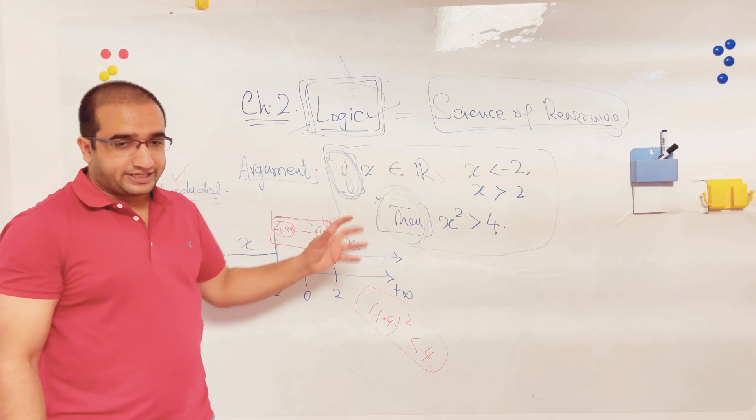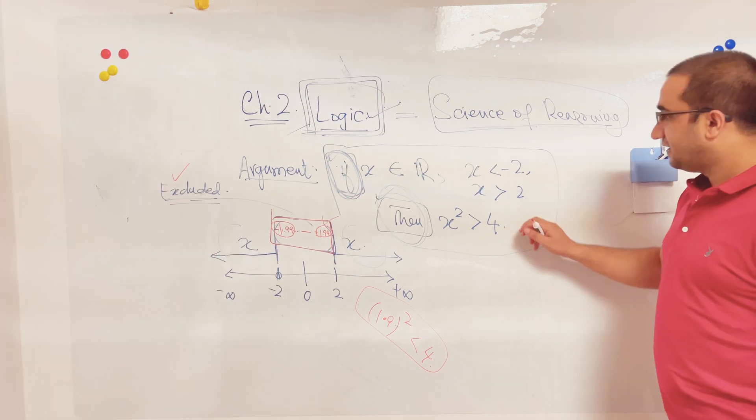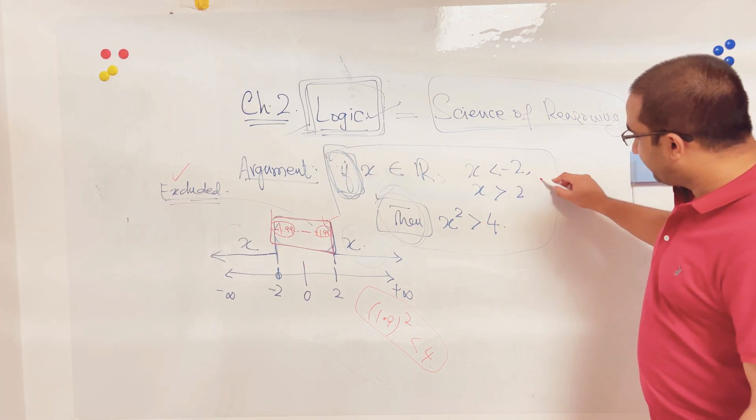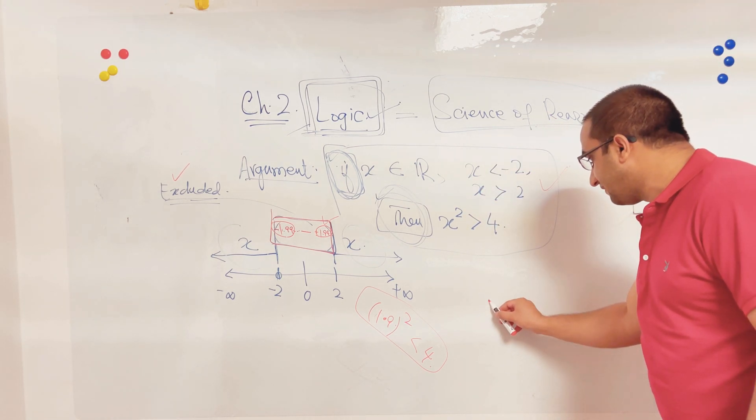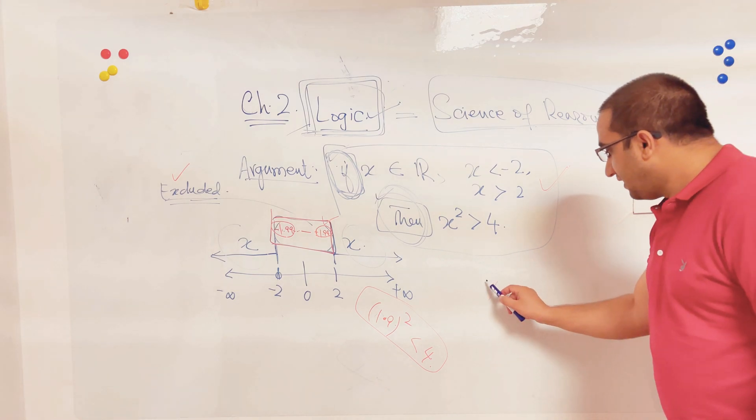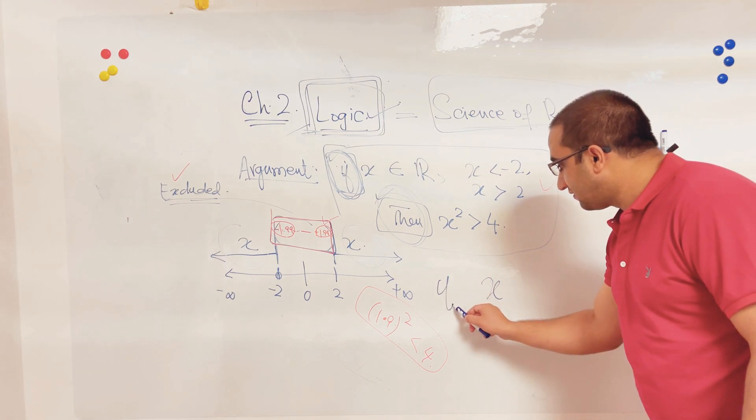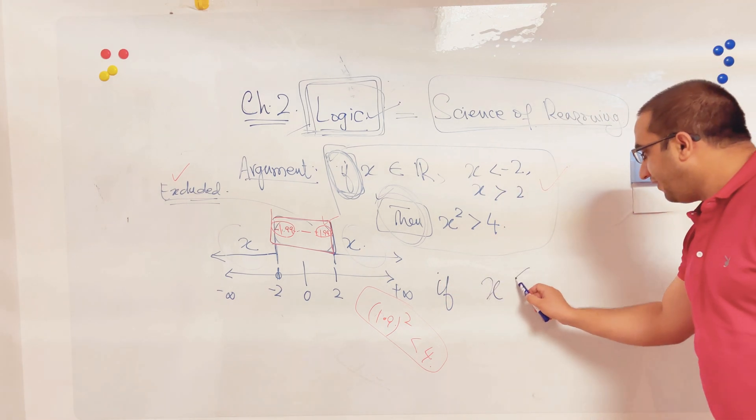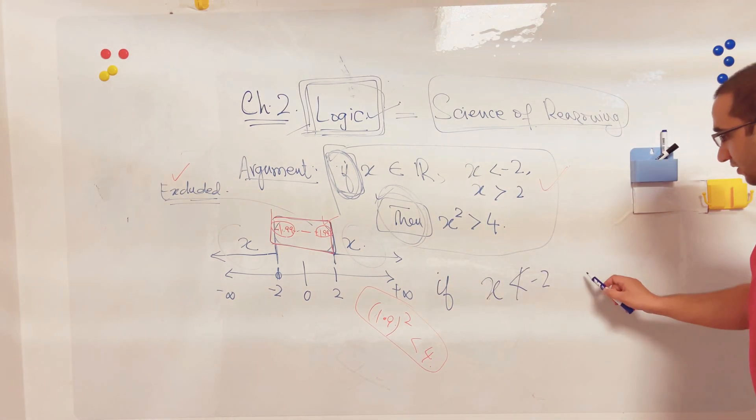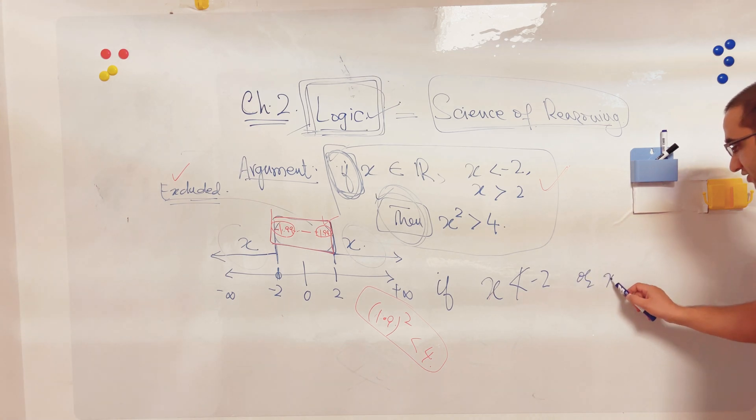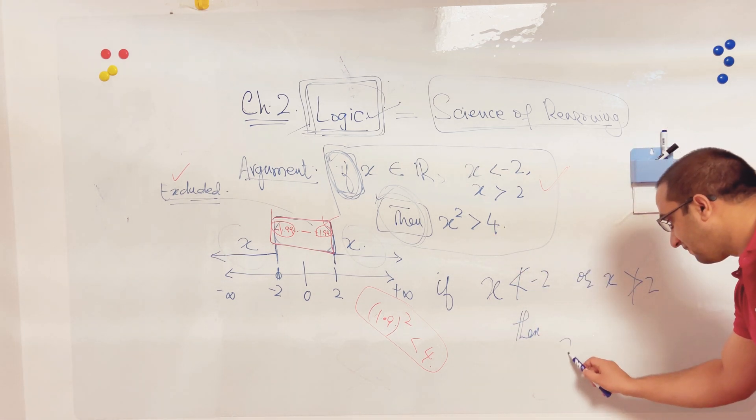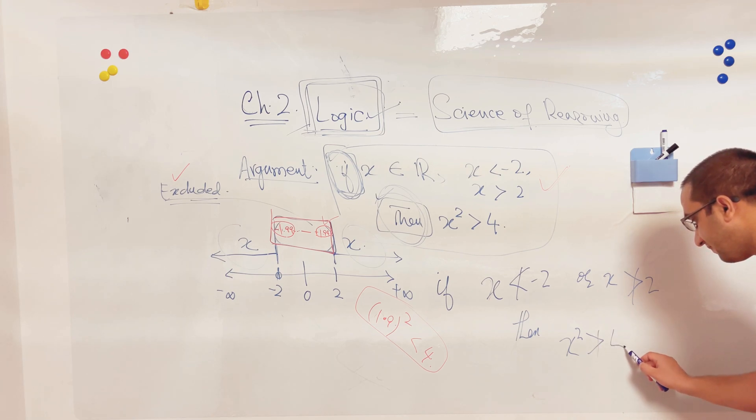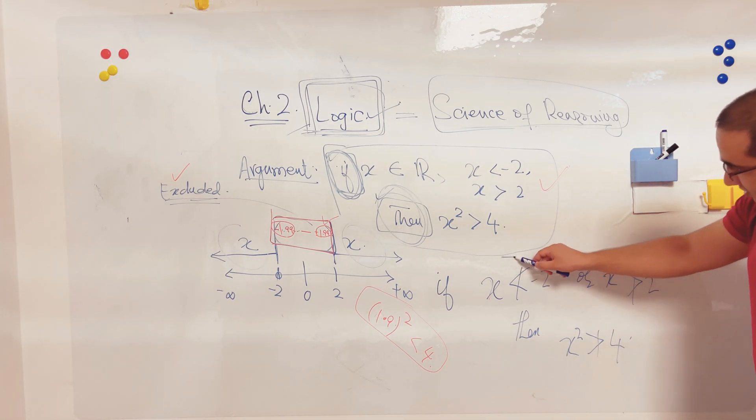My argument contains some kind of logic. I can say if this is written like this, then I can revert this situation and I can say that if my x is not less than minus 2 or it is not greater than 2, then x squared will not be greater than 4.